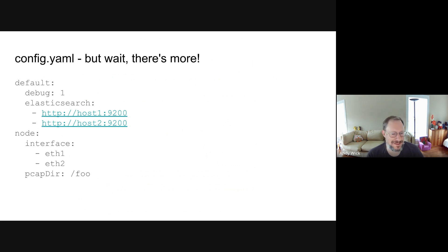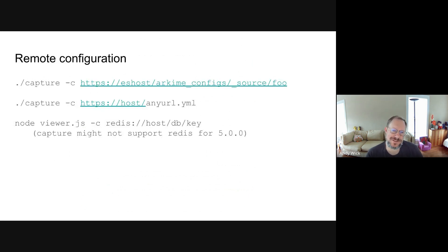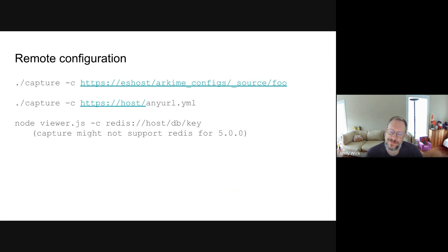The best part is that all of the tools — from Parliament to Capture to Viewer — all support the same file format and are all using the same code to read it in. You can also do remote configuration. Here are some examples of Capture starting up with either an Elasticsearch configuration or a YAML configuration that lives on a different host — it can now download that configuration file and use it. You can also do Redis, though currently Capture doesn't support the Redis distribution method but all the other tools do.